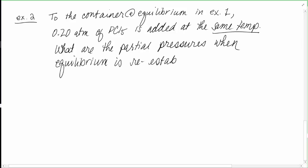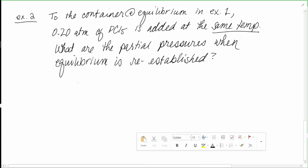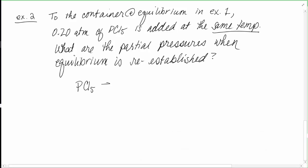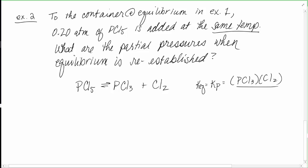We're going through the same steps. Step one is the equation — I'm rewriting it for a new ICE table. Step two is the Keq expression, which in this case is Kp because everything is in partial pressures in atmospheres. Remember, the expression has no numbers — except for exponents. Then we set up the ICE table in atmospheres.